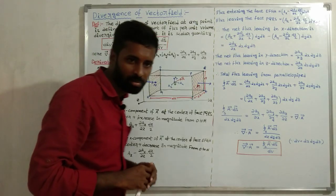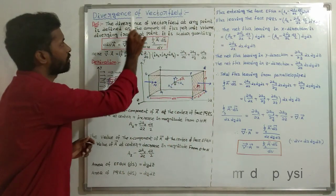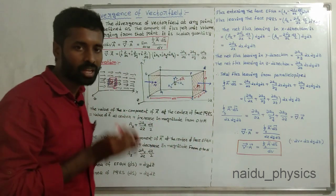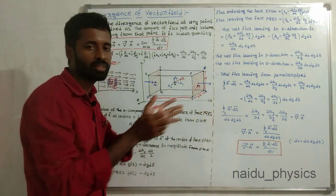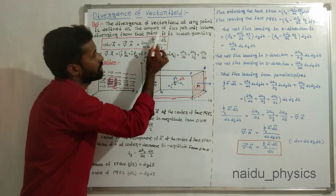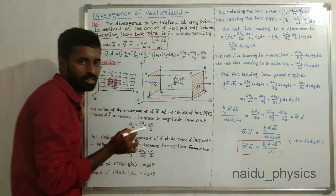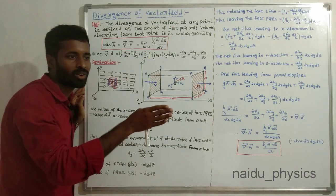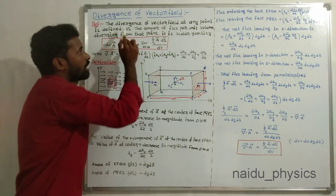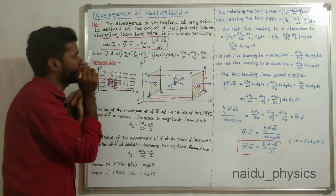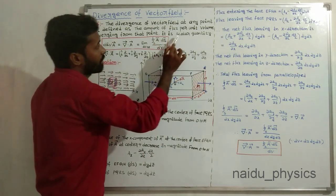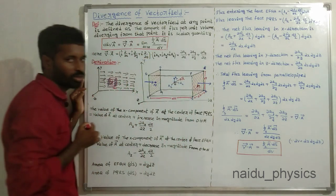Hi everyone, this is Vinaydu, MSC Physics. Today our topic is divergence of vector field. The divergence of vector field at any point is defined as the amount of flux per unit volume diverging from that point. It can be represented by div A-bar, equal to the surface integral of A-bar dot dS-bar divided by dv. The del-bar dot A-bar can be expressed as ∂Ax/∂x + ∂Ay/∂y + ∂Az/∂z. The divergence of a vector field is a scalar quantity — it has only magnitude, no direction.